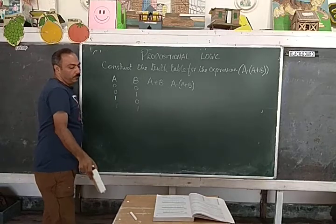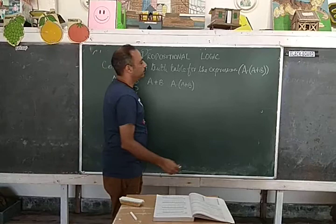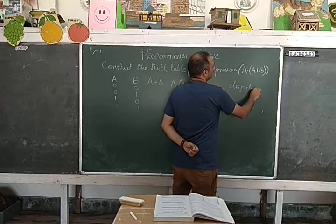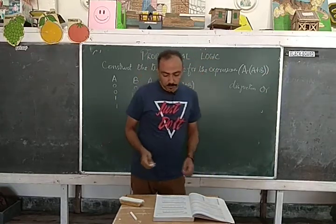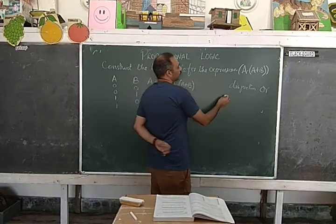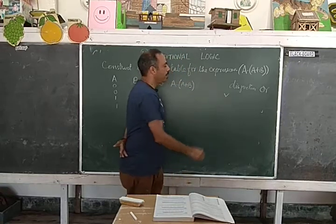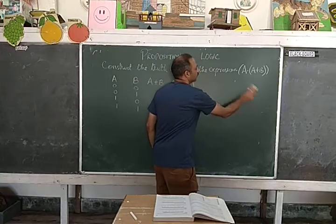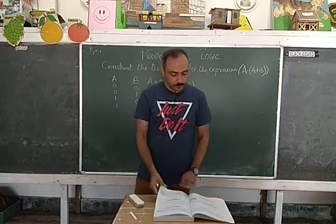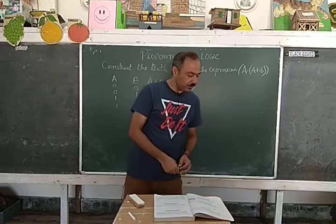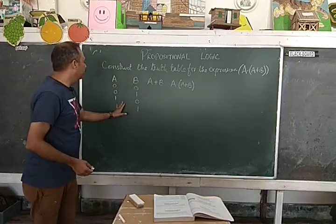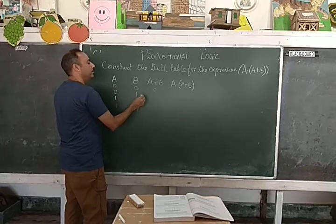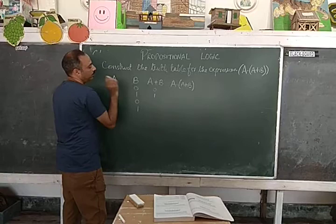Now we have to use this expression. You know about the disjunction operator — disjunction is also called the OR operator. You must know the symbol also. This symbol means OR. So here we have to build the OR expression. In the OR expression, any one condition being true means it returns true. So here both the conditions are false, so it returns 0. Here any one condition is true, then it is true. Here one condition is true, it is true.